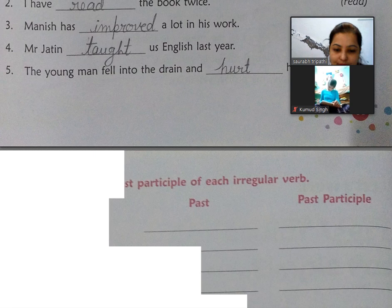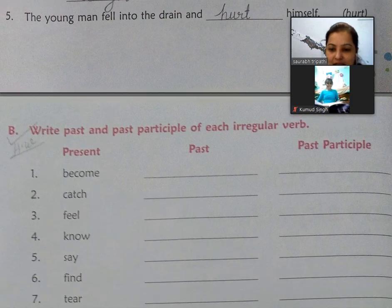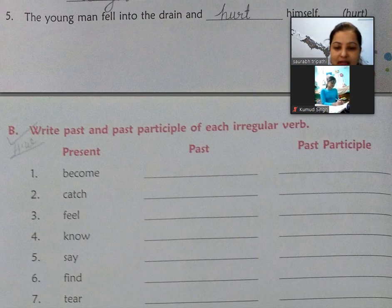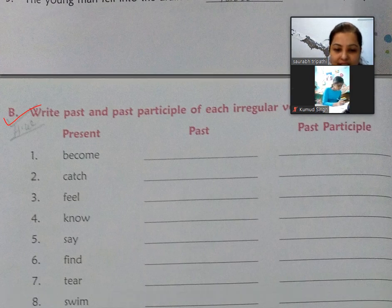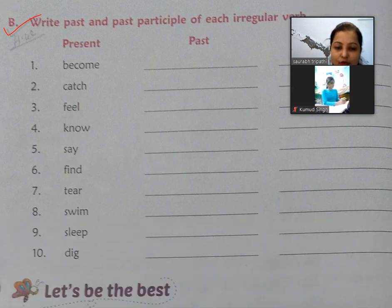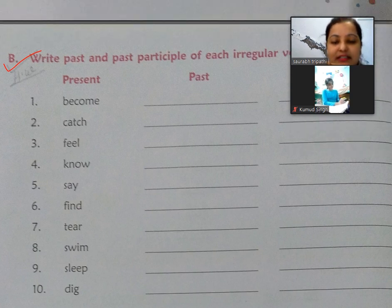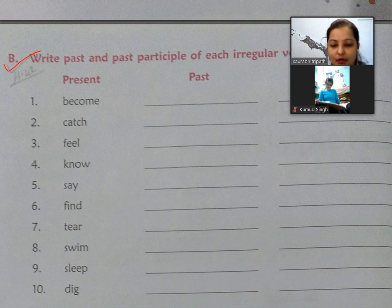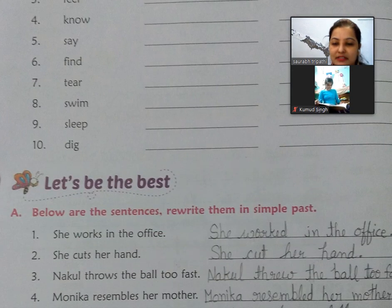Next page par chalte hain — Exercise B hai. Ismein sirf aapko second aur third form likhni hai, past aur past participle likhna hai. Yeh aapka homework hai, isko book mein kariye. Yeh aapki practice ke liye hota hai. Agar aapne pehle padha hoga toh aapko already aata hoga. Agar nahi bhi aata hai toh aapke paas book hai, ya Google se bhi search kar sakte hain. Isko likhiye aur also learn it.